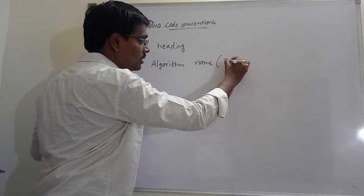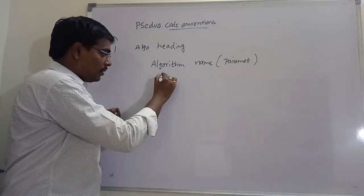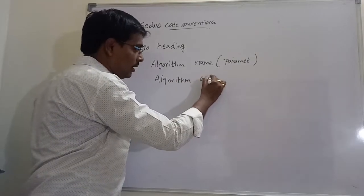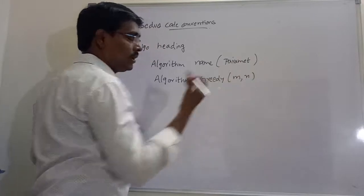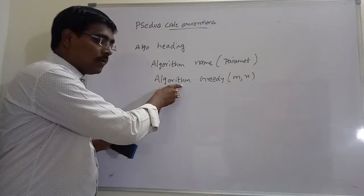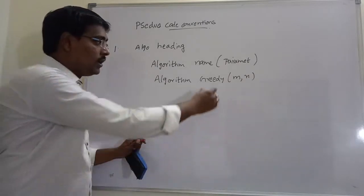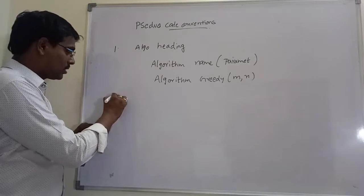name of the algorithm, with some parameters. For example: Algorithm Greedy(M, N). So algorithm means we are specifying or defining an algorithm. This is the name of the algorithm. These are the parameters used in the algorithm.